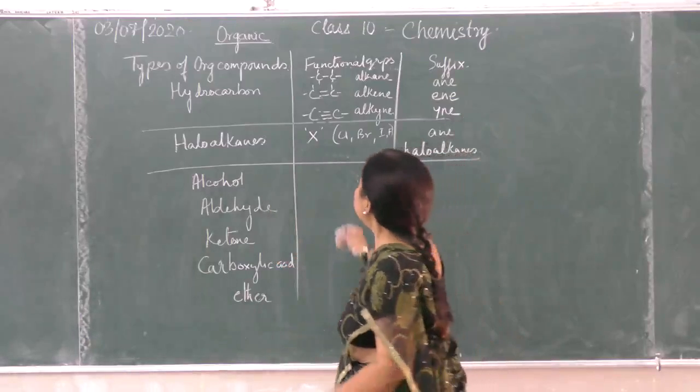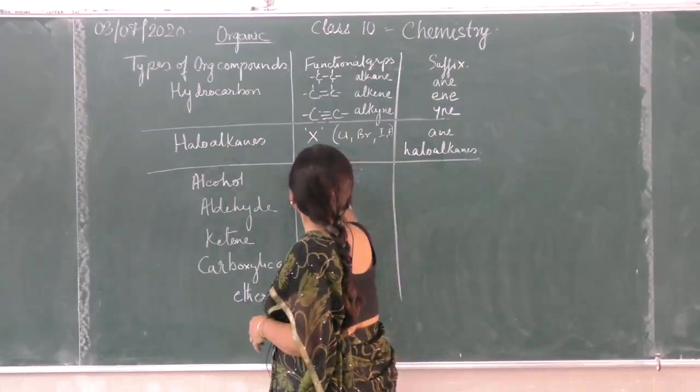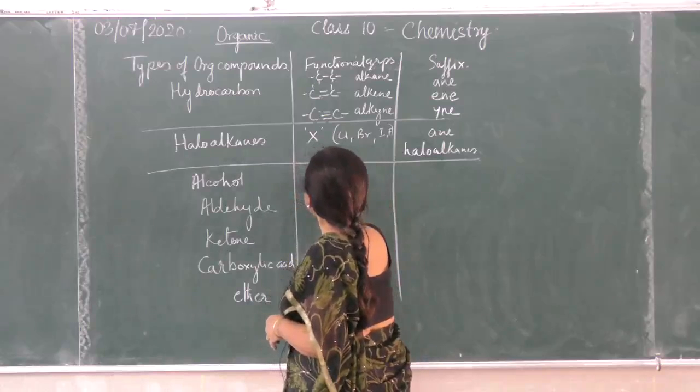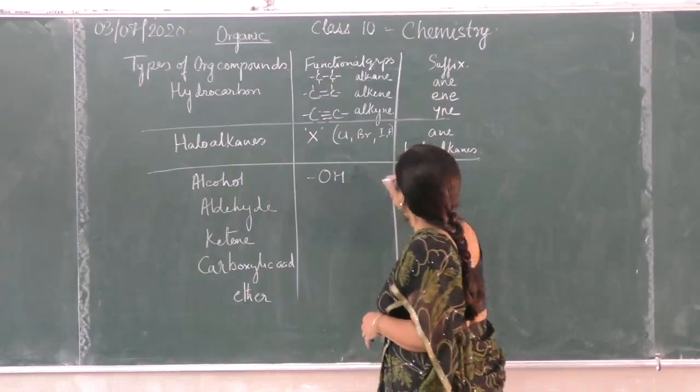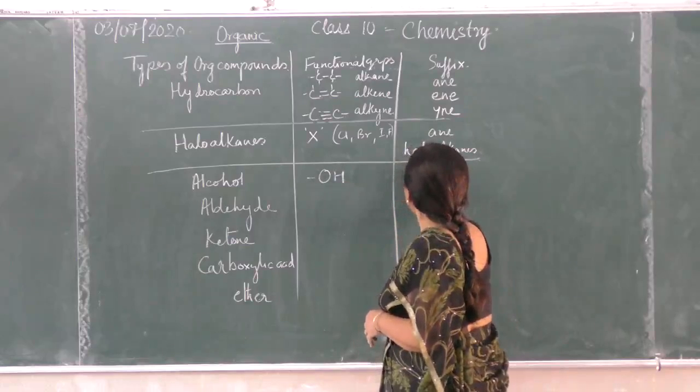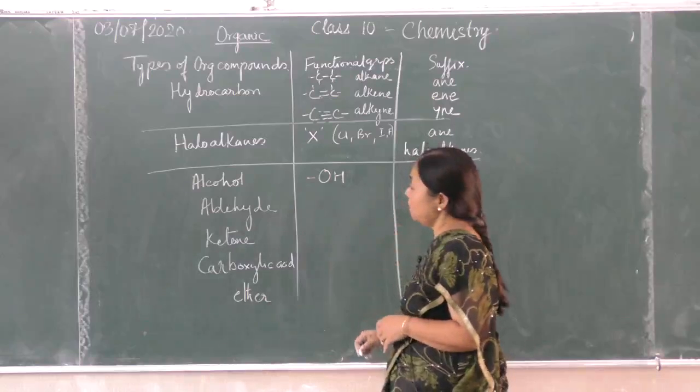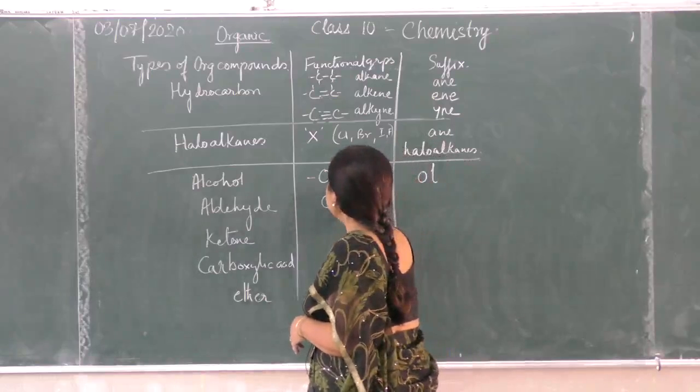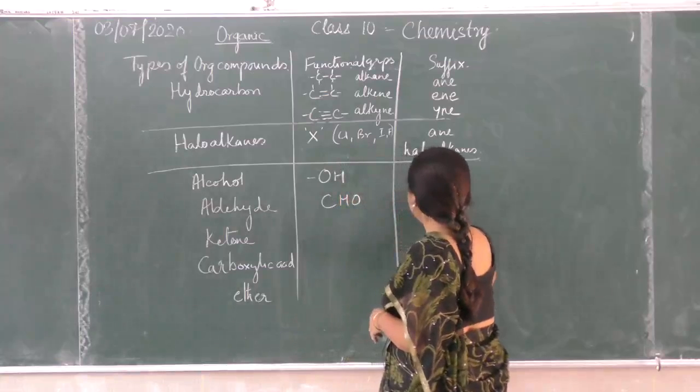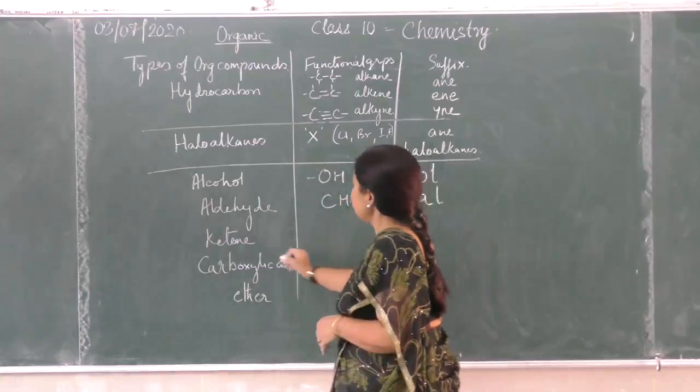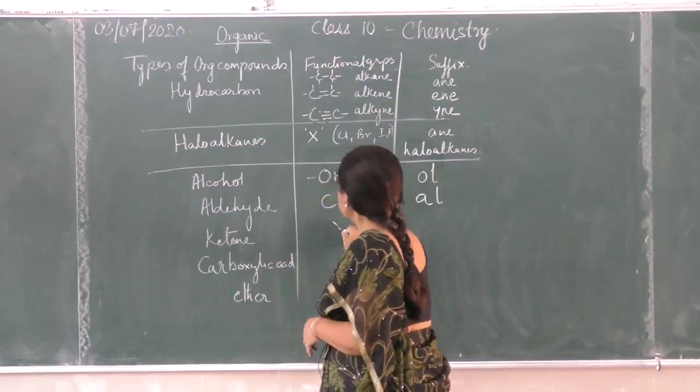Alcohols - the functional group is OH. This represents an alcohol, this is the functional group, and the suffix is -ol. Aldehyde is CHO and the suffix is -al.